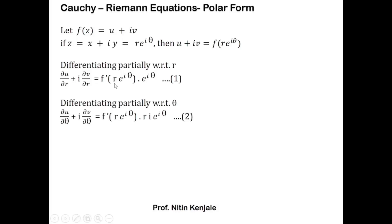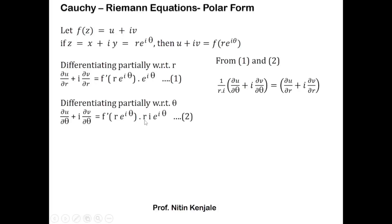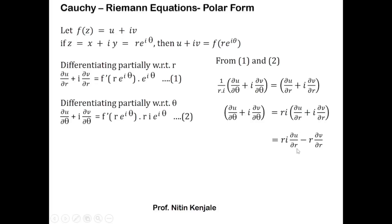Note that if we take the factor r·i to the other side in equation two, the right-hand side becomes f'(re^(iθ))·e^(iθ), which is the same as the right-hand side of equation one. Since both right-hand sides are equal, their left-hand sides must also be equal. Comparing equation one and two, we get: (1/ri)(∂u/∂θ + i·∂v/∂θ) = ∂u/∂r + i·∂v/∂r. Moving ri across and multiplying inside the bracket, we get ri·∂u/∂r + ri²·∂v/∂r, where i² = -1, giving ri·∂u/∂r - r·∂v/∂r.